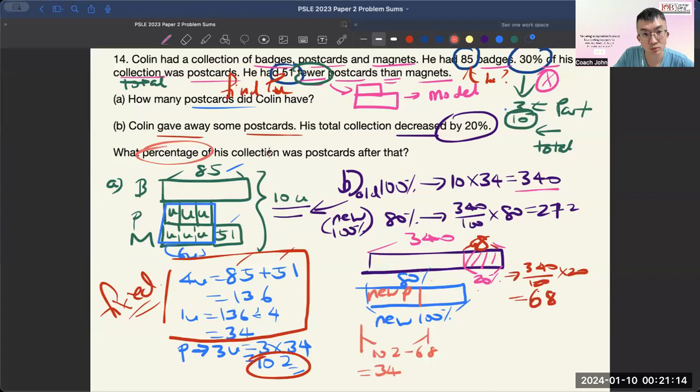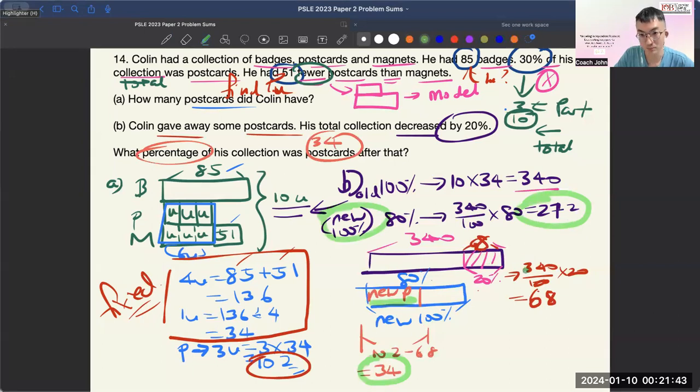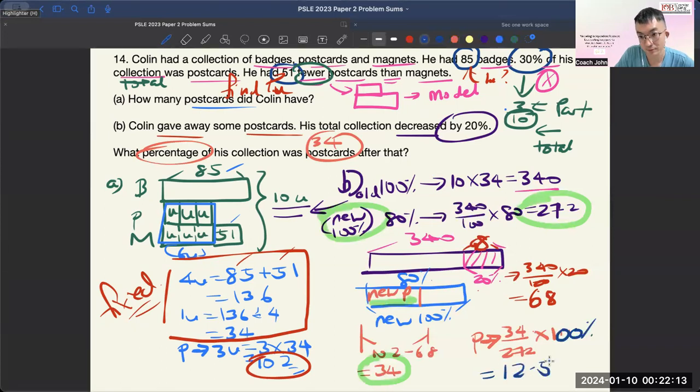And they want to know for this 34 postcards, what is the percentage of it in the collection? This is the postcards, the new postcards. And this is the new 100%. So 34 out of 272, what is the percentage take up? So your answer will be 34 out of 272 times 100%. Let me just change the color. So when you use calculator, you'll be 12.5%.